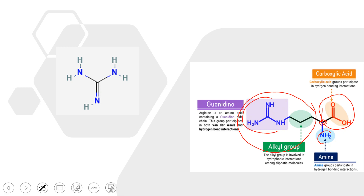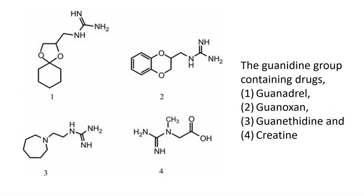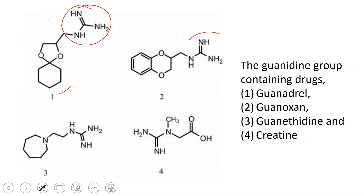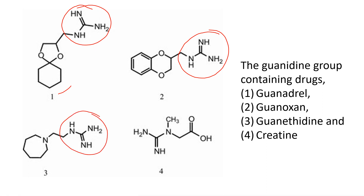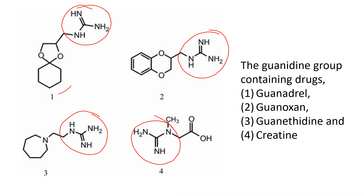There are a number of other compounds and medicines that also contain the guanidine group. These include guandril, guanogen, guanethidine, and creatine — all of which contain the guanidine group. So wherever the guanidine group is present, those compounds will give a positive Sakaguchi test, whether it is arginine alone, arginine in a protein, or guanidine group present in any other compound.